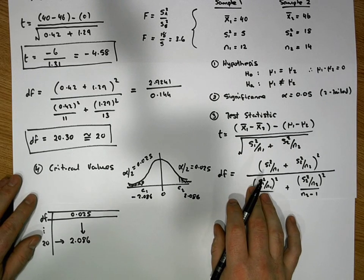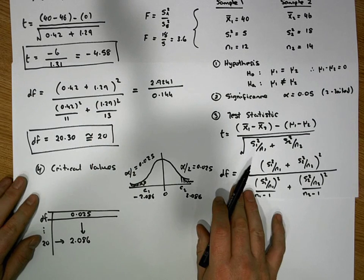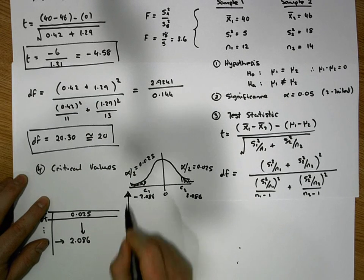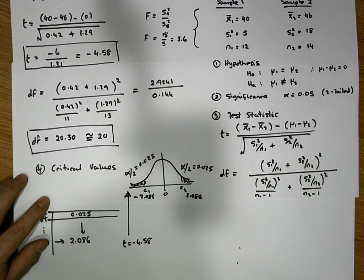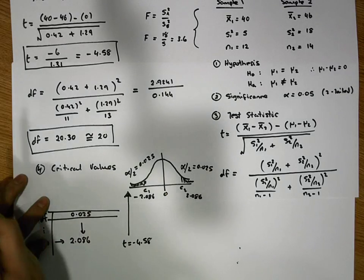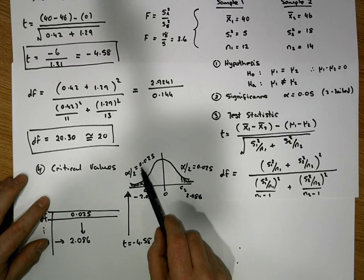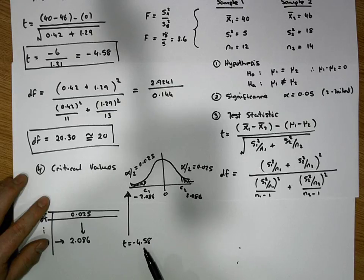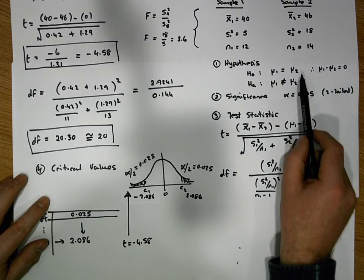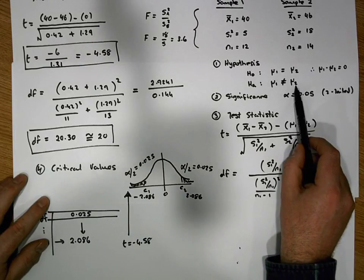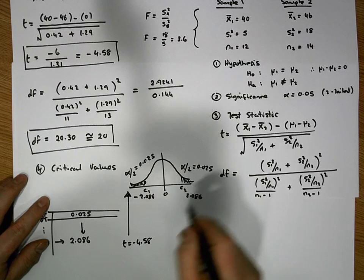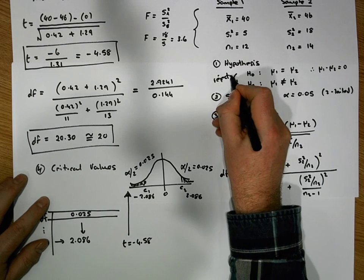What's pretty clear is that our test statistic of minus 4.58 falls in the left-hand tail. If the null hypothesis is true and μ1 equals μ2, then the probability of observing a test statistic as extreme as minus 4.58 is at most 0.025 — a very small probability. This means the alternative hypothesis must have a much greater probability associated with it.